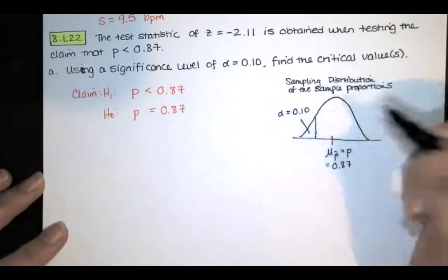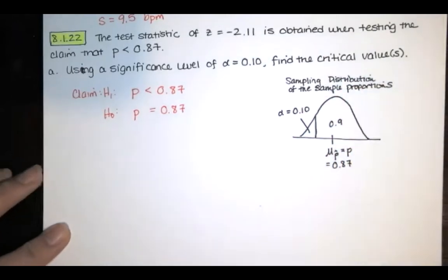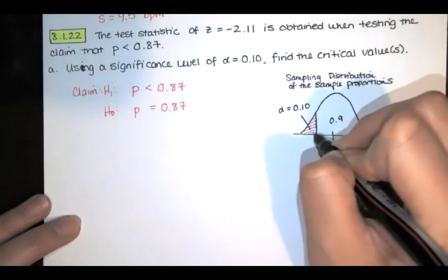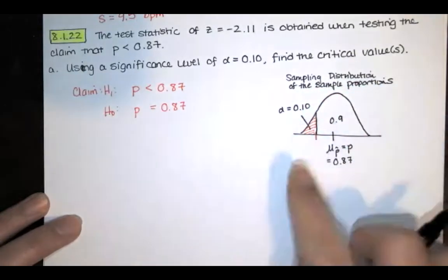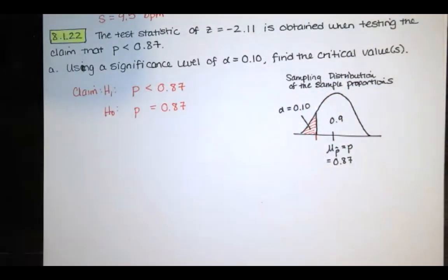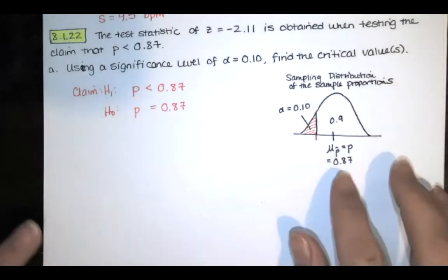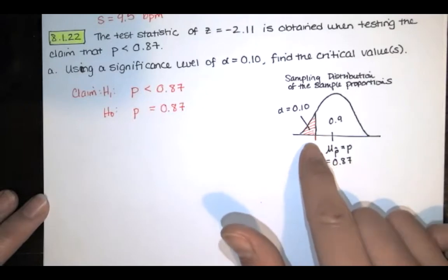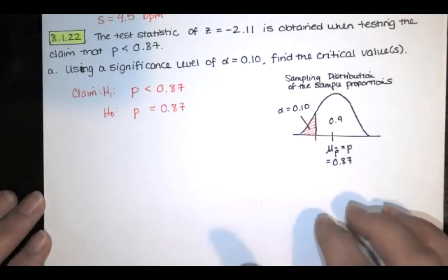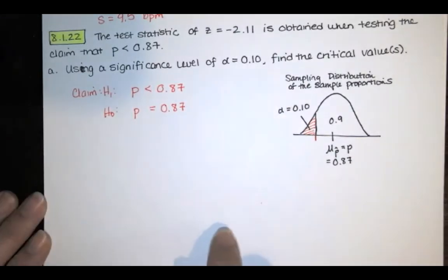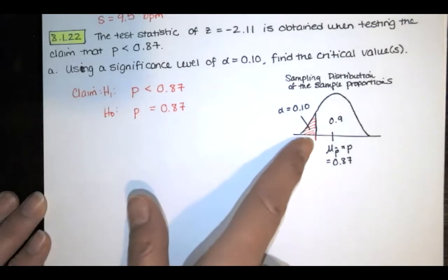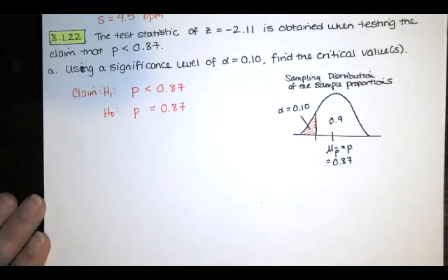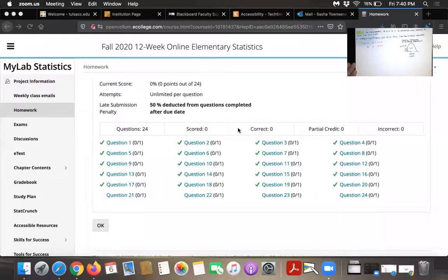If alpha is 10%, then the complementary region is 90%. The question is: what is the critical value associated with that? For a sampling distribution of sample proportions, we always compute that critical value as a z-score. So let's look at our table of z-scores to find the z-score that separates the bottom 10% of the area from the top 90% of the area. I will share my screen to do that.